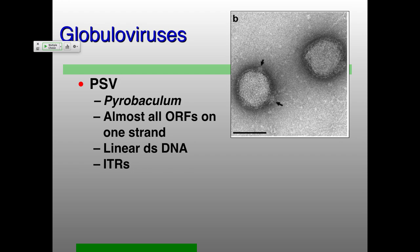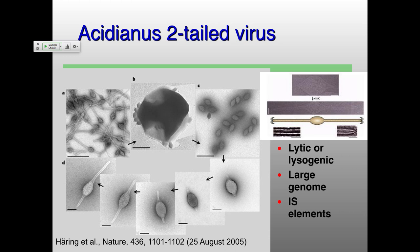There are also spherical-like viruses. These are curious not so much because of their virion morphology but much more because of their genomes. Almost all of the open reading frames are just on one strand, so it looks like they're being transcribed from just one promoter. They also have inverted terminal repeat sequences and linear double-stranded DNA.